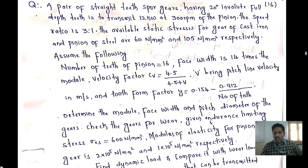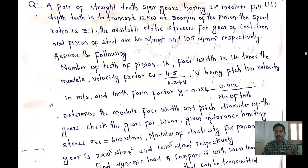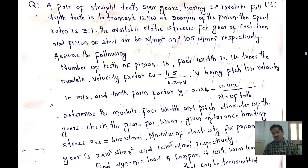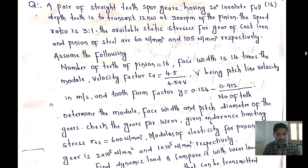The tooth form factor Y is given as Y = 0.154 − 0.912 / number of teeth. In this problem we need to determine: first, the module M; second, the face width and pitch diameter of the gear.